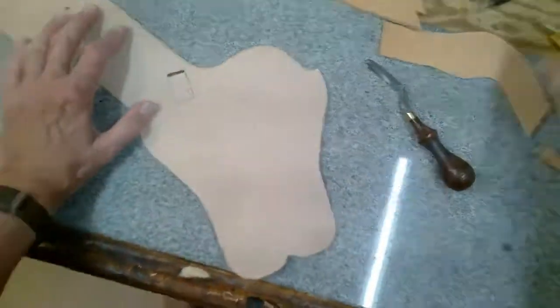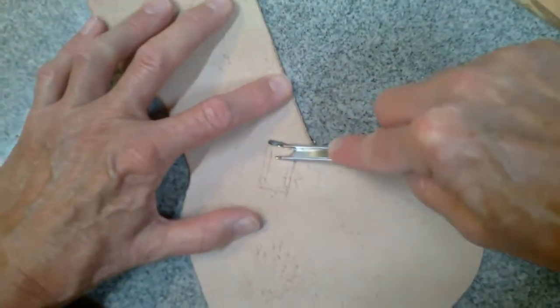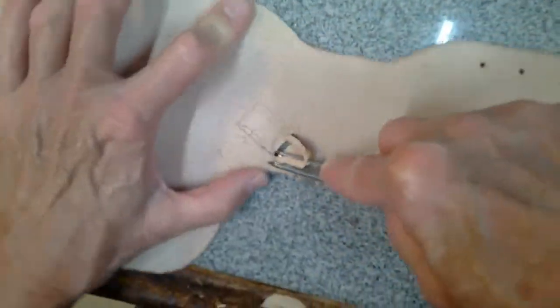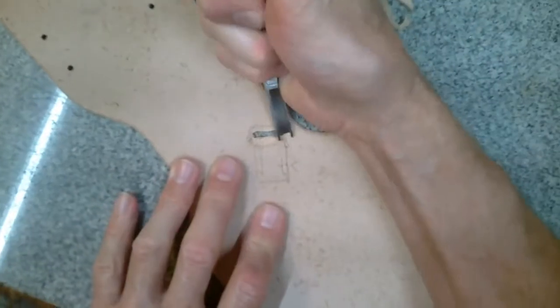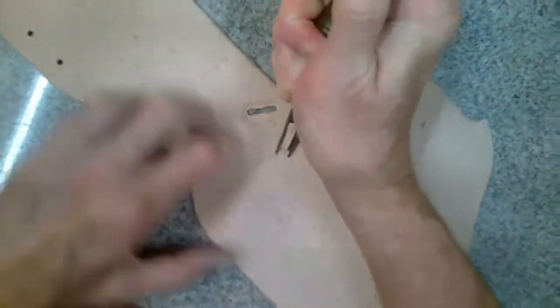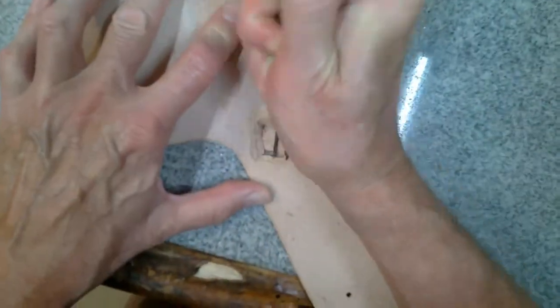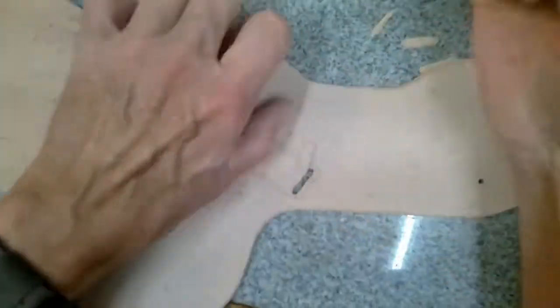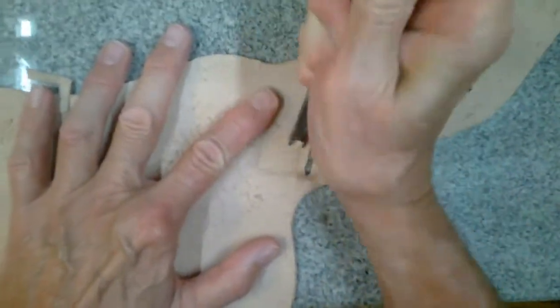This isn't a necessary step but helps the safety strap integrate into the holster body without the bulge of two full layers of leather when sewn together. I use a number four safety skiver to narrow the leather around the slot and where the safety strap will be sewn to the holster body.